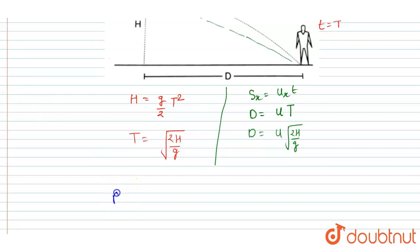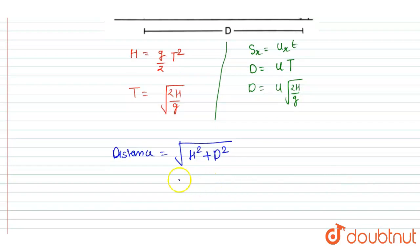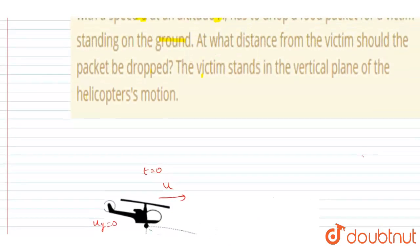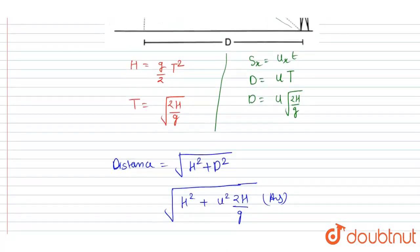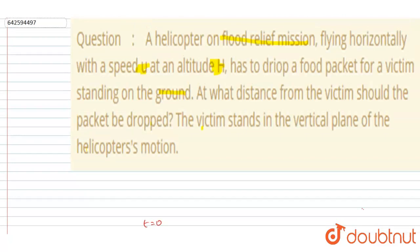The distance will be equals to under root of h square plus d square. So just put the value here: u square 2h by g. So this will be the distance of the victim from the helicopter when the helicopter dropped the food. So this is our question and we got the distance. This is our answer. Thank you.